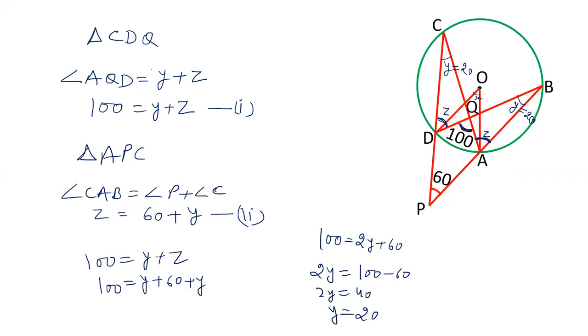Now angle AOD, which is X, is twice angle ACD and ABC. AOD is twice angle ACD. This is a property that in a circle, the angle subtended by the arc at the center is twice the angle subtended by the arc at the circle.